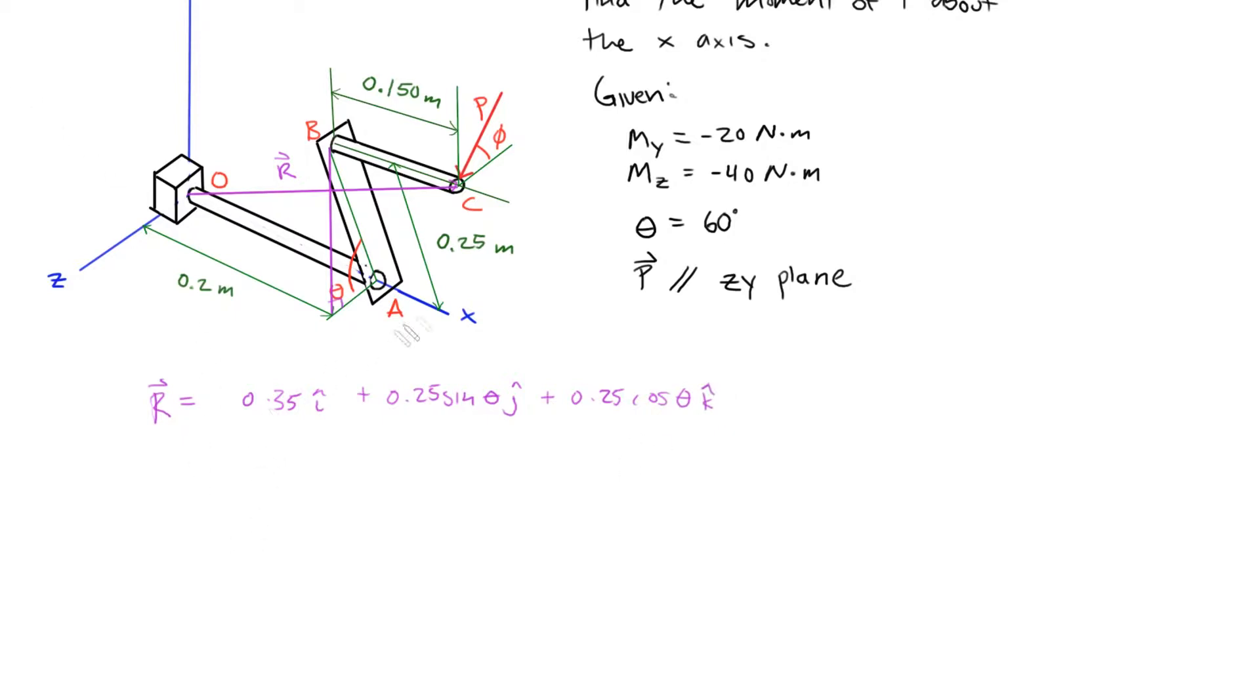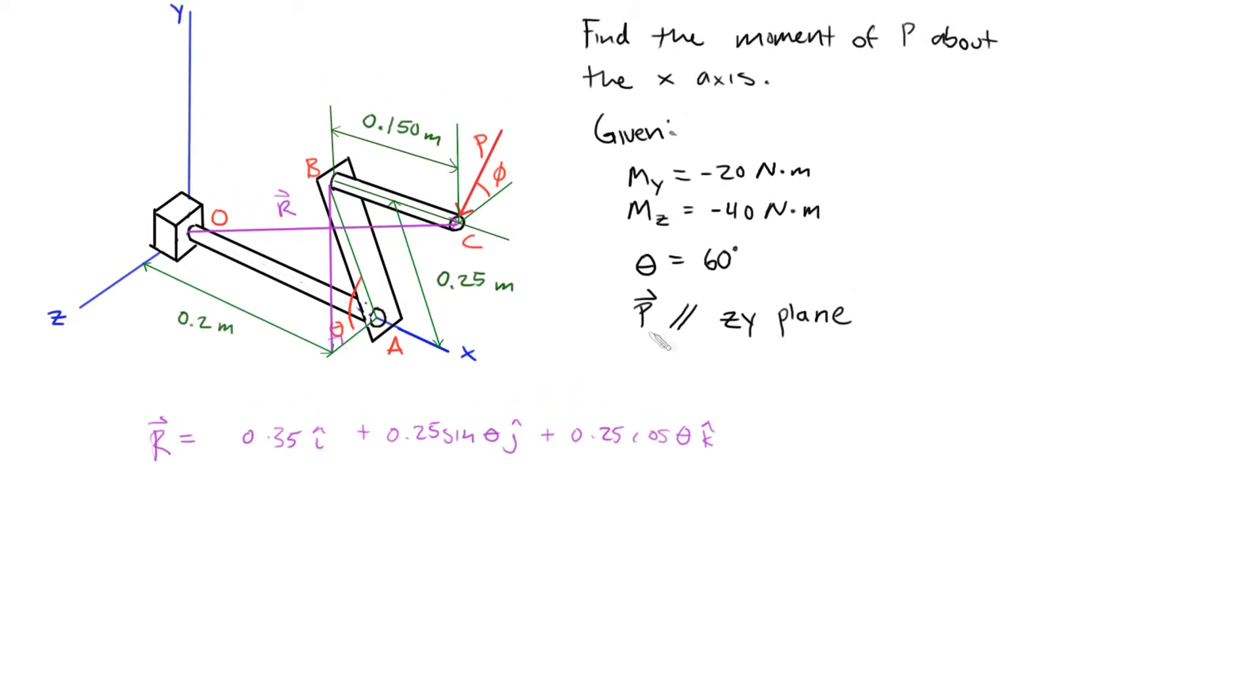Now we're going to define the force vector P. We were given that P is parallel to the z-y plane, which means there's no x component for the force vector. So P is equal to, it's shown at an angle, so the y component is simply the sine of that, but it's also negative because it's pointing downward. So it would be negative P sine phi, and that would be j.